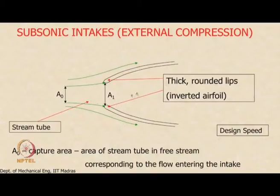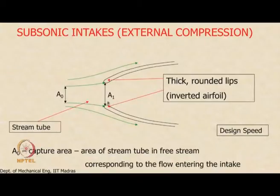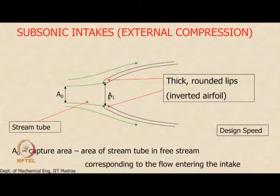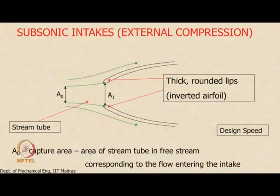Both internal and external compression are used. Under design operating condition, the flow is further decelerated in the diverging area — that is internal compression. The free stream tube area entering the intake is actually smaller than the intake entry area, meaning there is diffusion as the flow comes from the free stream and enters the engine intake. A₀ is the capture area, and this increase in capture area causes deceleration and compression — that is external compression.